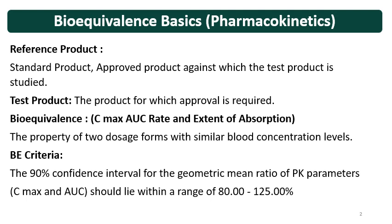What is the BE criteria? You can say bioequivalence is passing when the 90% confidence interval for the geometric mean ratio of PK parameters — like Cmax and AUC — lies within the range of 80 to 125%. The Cmax and AUC of the reference versus the test are statistically calculated to get the 90% confidence interval for the geometric mean ratio, and if it is within 80 to 125%, the product passes bioequivalence.